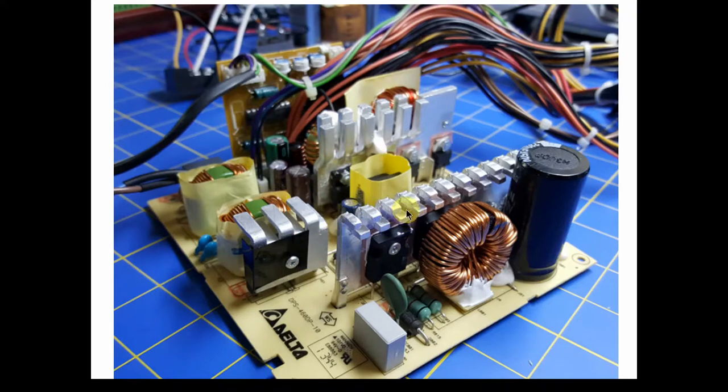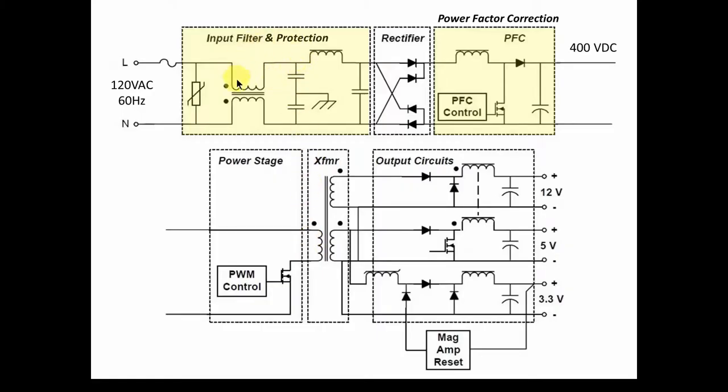And in this part two, we're going to look at the front end. Now in part one, we looked at basically the rectification circuit, which is this component right here, a full bridge rectifier. This is basically the heart of the switch mode power supply, the converter that converts from AC to DC. But now we're going to get into a little bit more detail. And in this video, we're going to look at what I call the front end, which is the input filter and protection stage.